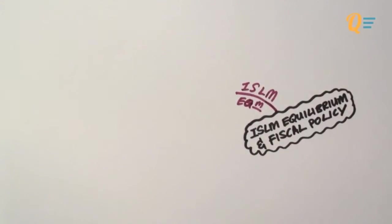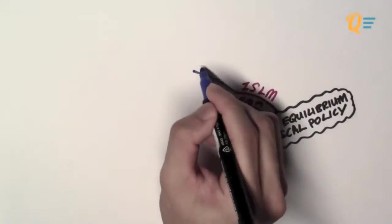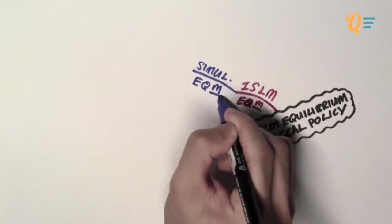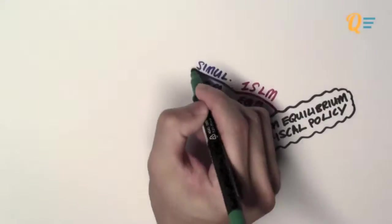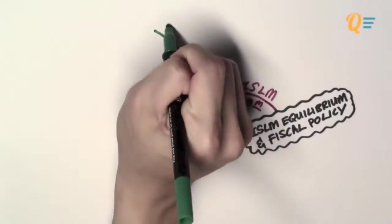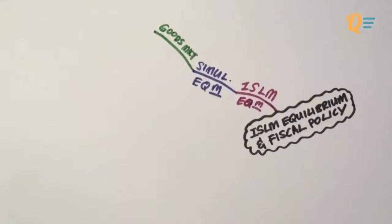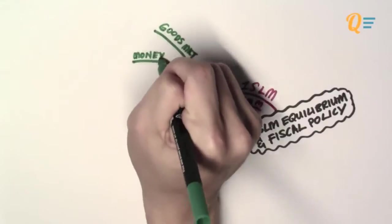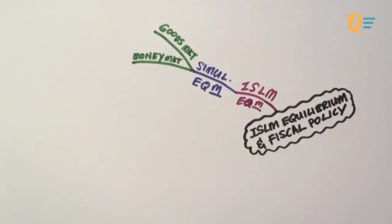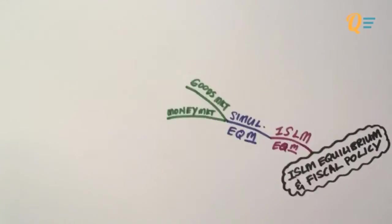In order to have equilibrium in the IS-LM model, you're going to need a simultaneous equilibrium happening in two different markets. The first market is going to be your goods market, and the second market is going to be your money market. So let's do a quick recap on how we graphically represent each of these markets.